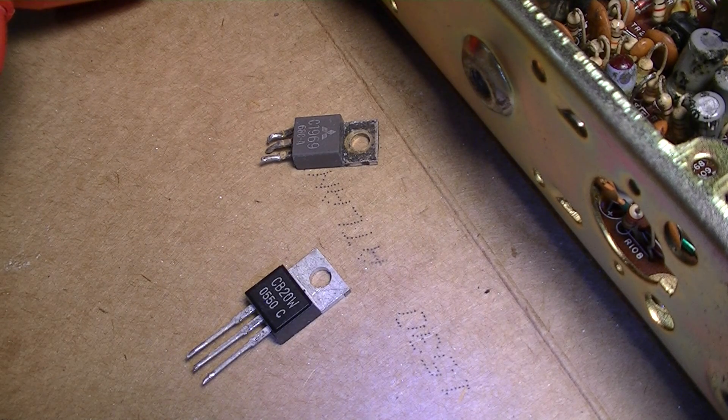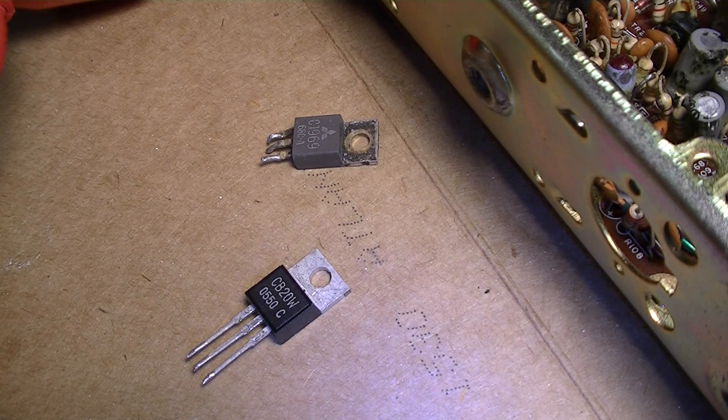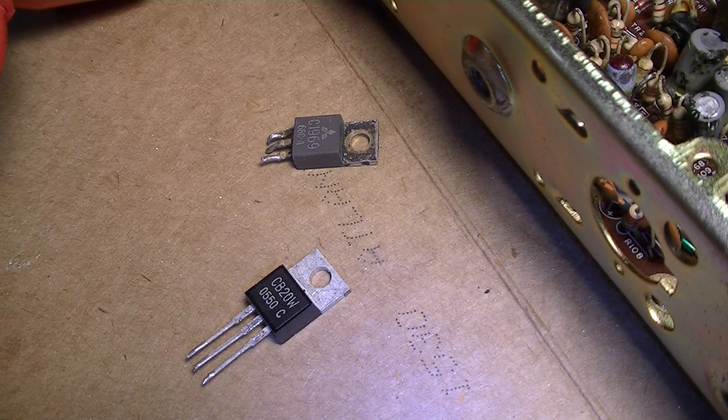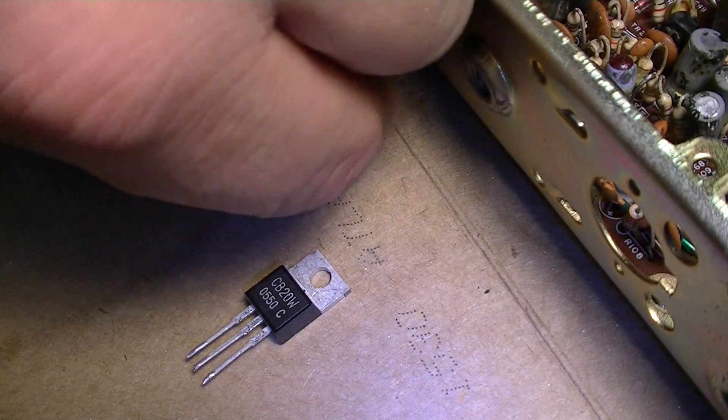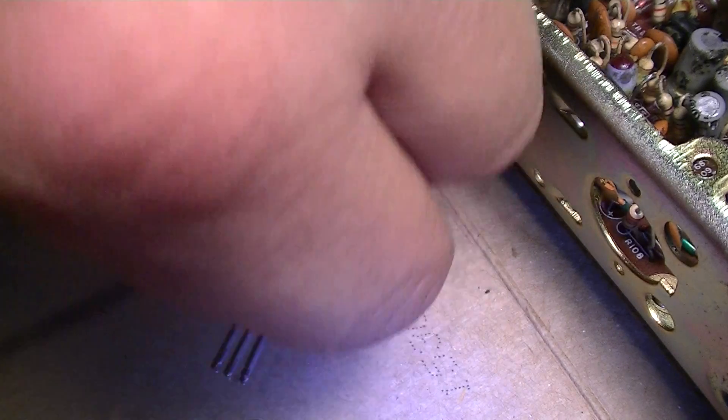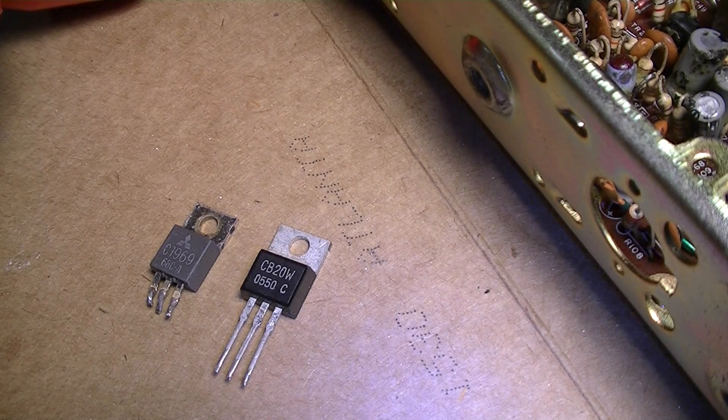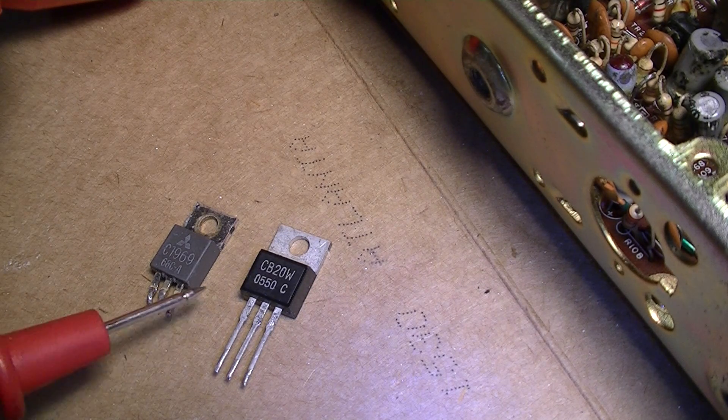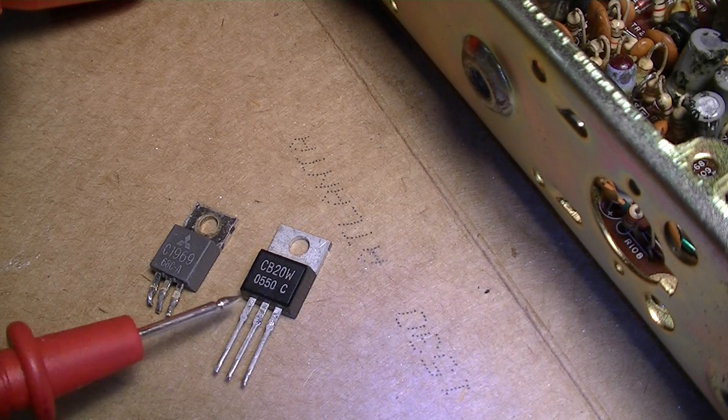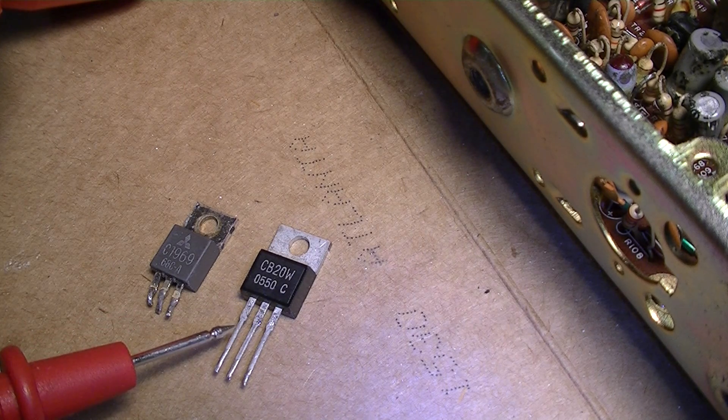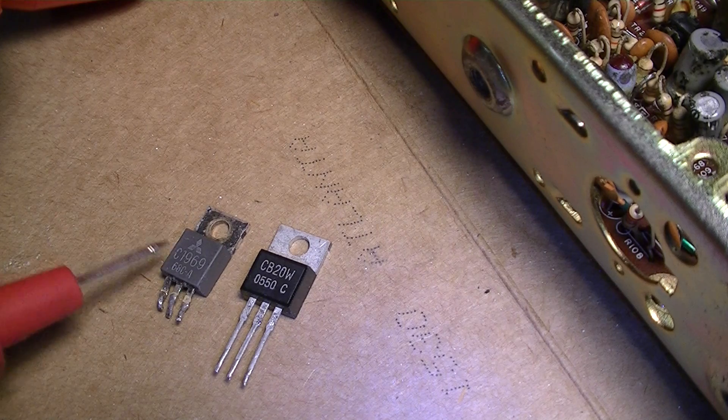Those are all the checks on the diode scale of your meter for the 1969 2SC 1969 final used in CBs. We were just checking the CB20, which is the replacement to the 1969.